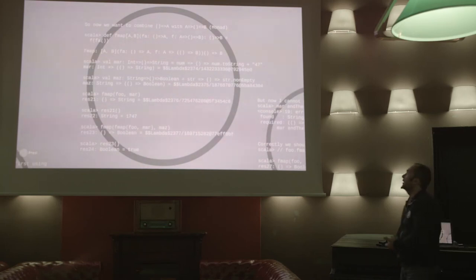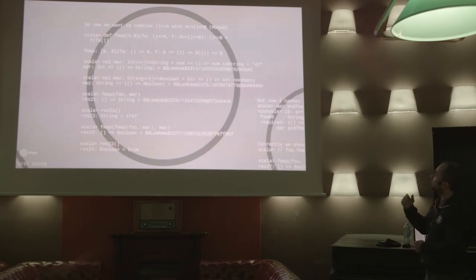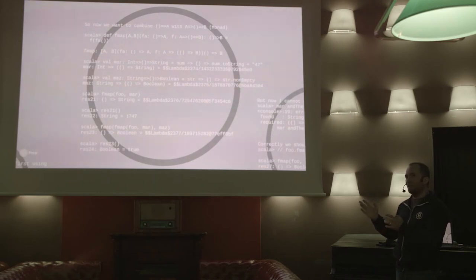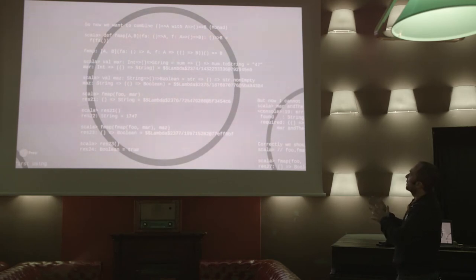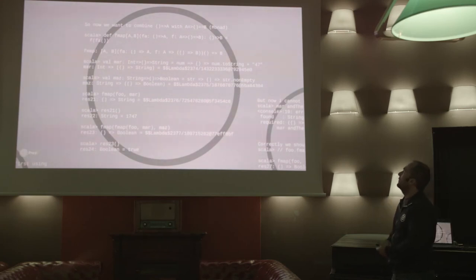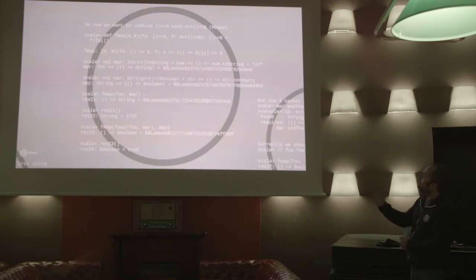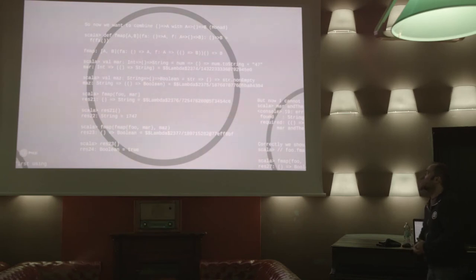The next problem is that when I have a nullary function and I would like to compose it with a unary function which is returning a nullary function, when you look at the signature of this type, you will see that this is pretty similar to what people are used to calling a Monad. So this time I just define a flatMap function — yes, that is the signature of a flatMap function — and at the end I am able to also prove that this combiner gives me exactly what we really want.